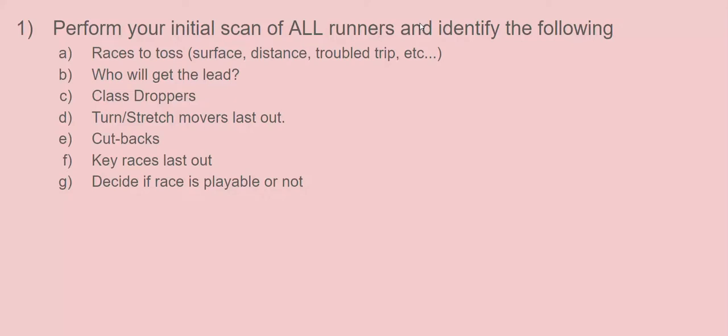Step one: Perform your initial scan of all the runners and identify the following. Number one would be races to toss—meaning current races and past races—as you go through based on the surface. If today is a race being run on dirt, I preferably look for all dirt races, so I will strike out all the races that are run on turf. I'm not interested in that.